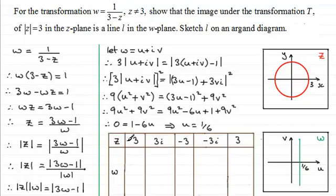I'll show you by way of a table what's happening. If we take some key points for Z: Z equaling the real number 3, then 3i, then the real number minus 3, then minus 3i, and then back to 3 — let's see what values we get for W.